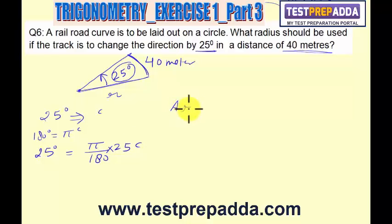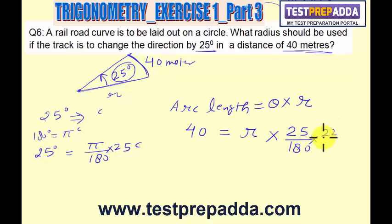Now we know arc length is equal to theta, that is angle in radians, into radius. Arc length is given as 40, radius we have to find, angle is 25 upon 180, and π I'll write 22 by 7. Now if I solve, I get R as 91.719 meters.